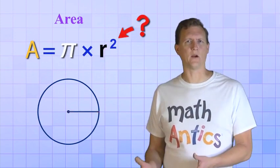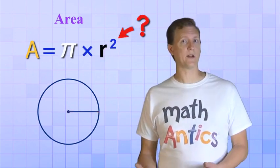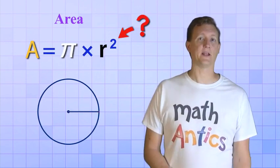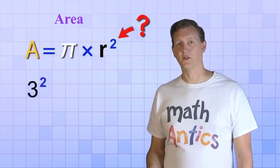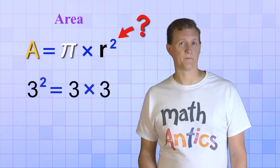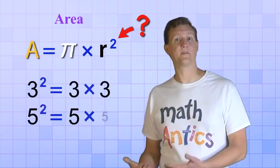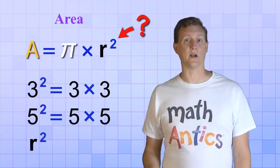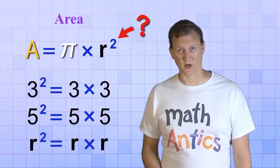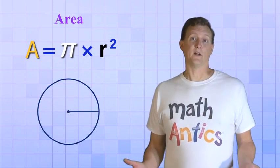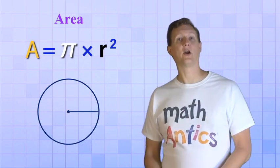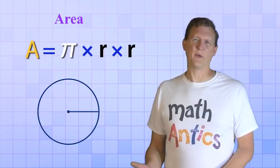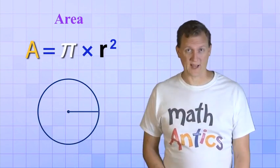Okay, but what does it mean to square the radius? Well, squaring a number just means multiplying it by itself. For example, 3 squared just means 3 times 3 and 5 squared just means 5 times 5 and r squared just means r times r. So our formula is really just area equals Pi times r times r. But we write it in the r squared form because it's more compact.